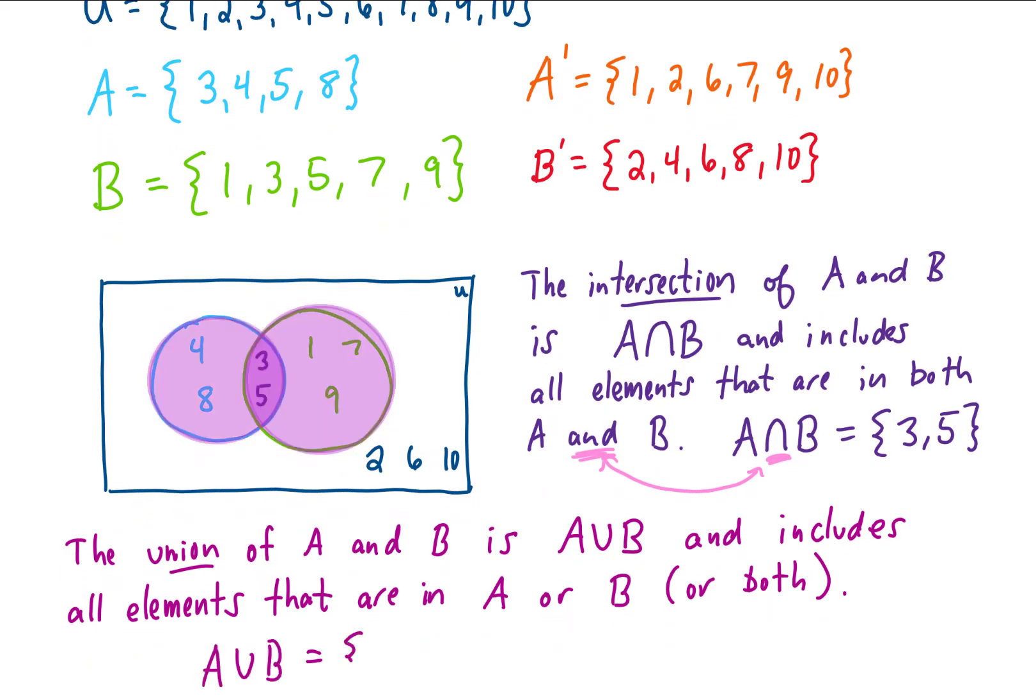In our example, A union B, I'll try to write them in order, is going to include the elements 1, 3, 4, 5, 7, 8, and 9. Those are all of the elements that are in either A or B or in both. And as another note, this union sign here we often think of as an OR.